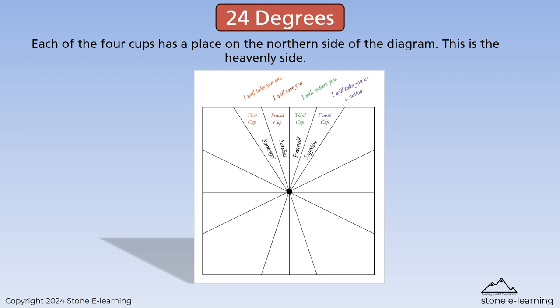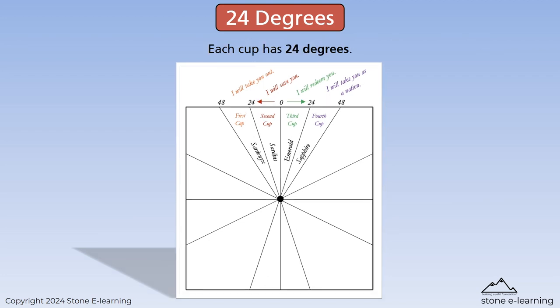Each of the four cups has a place on the northern side of the diagram. This is the heavenly side. Each cup has 24 degrees.